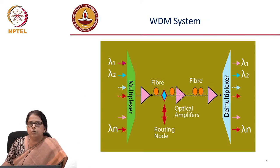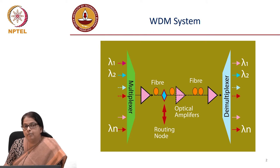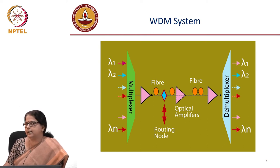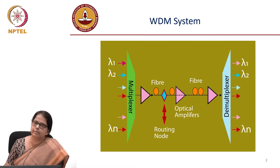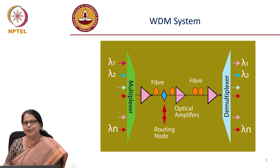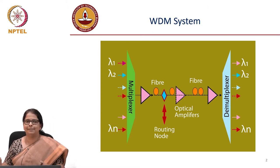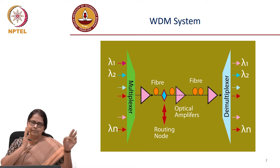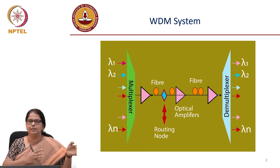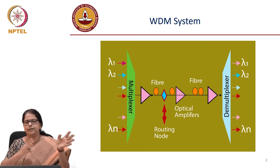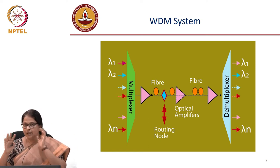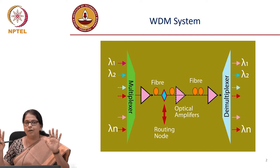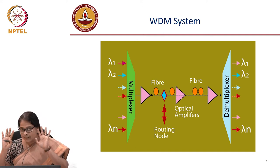We now move on to describing a WDM system. The erbium-doped fiber amplifier is very versatile because it can amplify all the wavelengths from 1530 or 1525 to 1565 nanometers. It can amplify all the colors simultaneously.